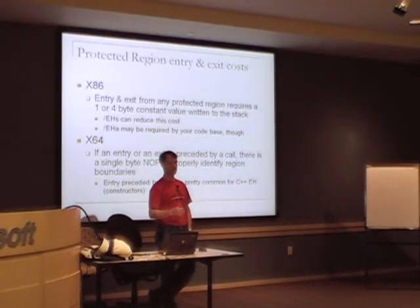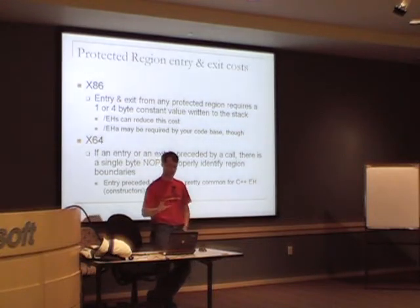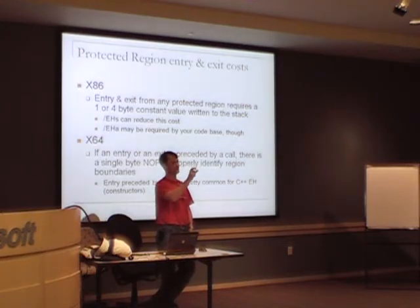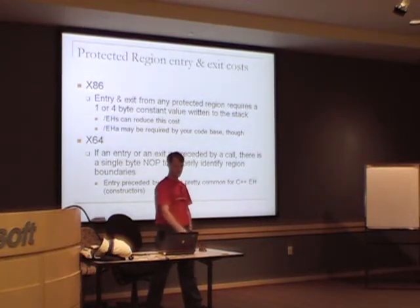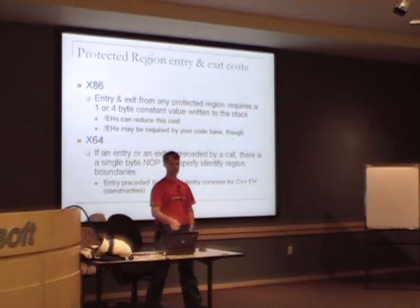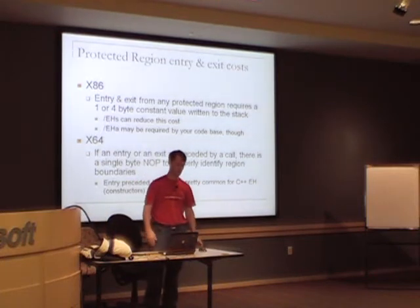For x64, there's generally no cost entering a protected region unless, right before or after a try block, you have a call — then you need a no-op, costing one byte of code size and a pipeline bubble. But it is cheaper than x86. Unfortunately this scenario is very common for C++ exception handling because you call a constructor and then enter the protected region where an object needs to be destroyed, so you need a no-op after every call to constructors that have a destructor.